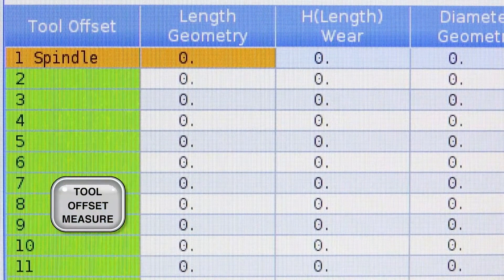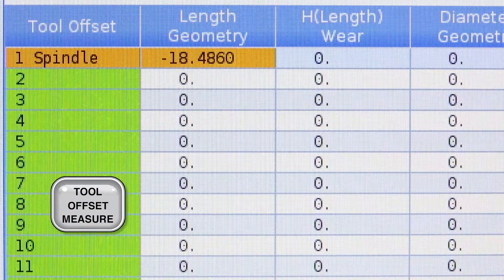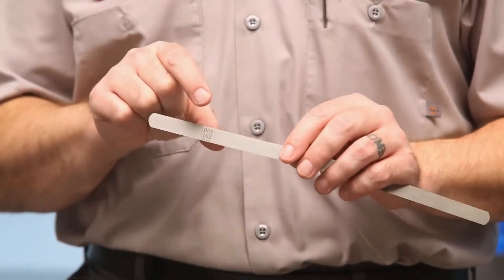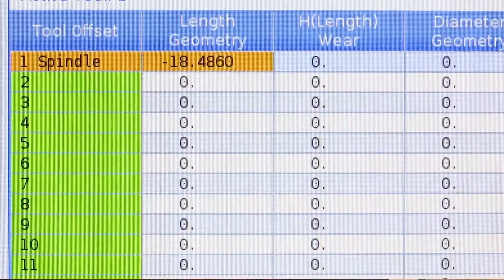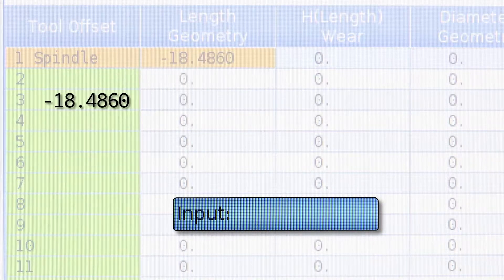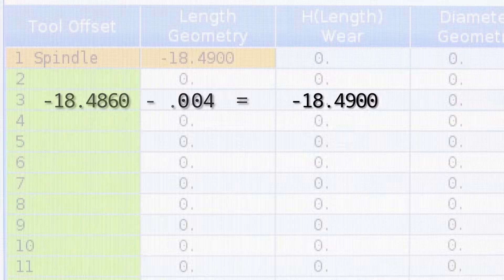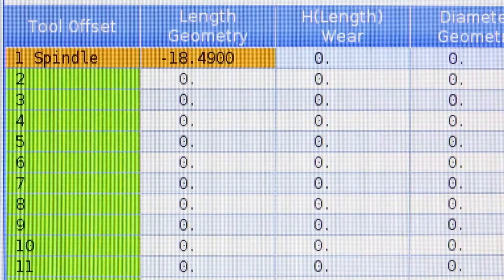At that point, we'll press tool offset measure. Now, with this method, we're not done yet. We've got to subtract the thickness of this shim from our tool offset. So, I have to type in minus .004 and press the enter key to subtract the thickness of that shim from that tool.